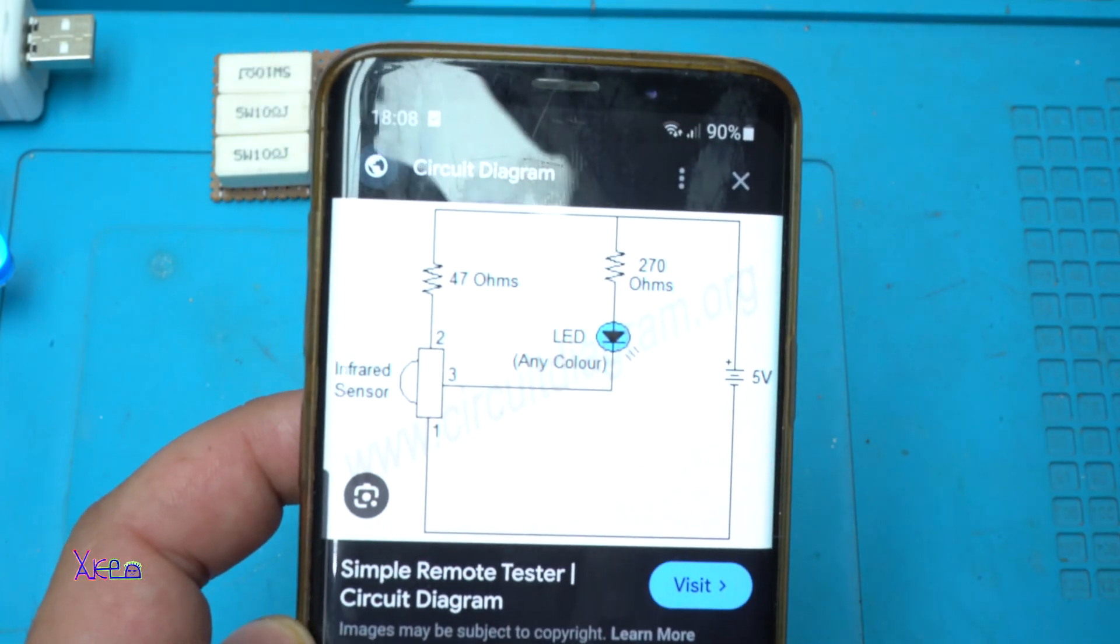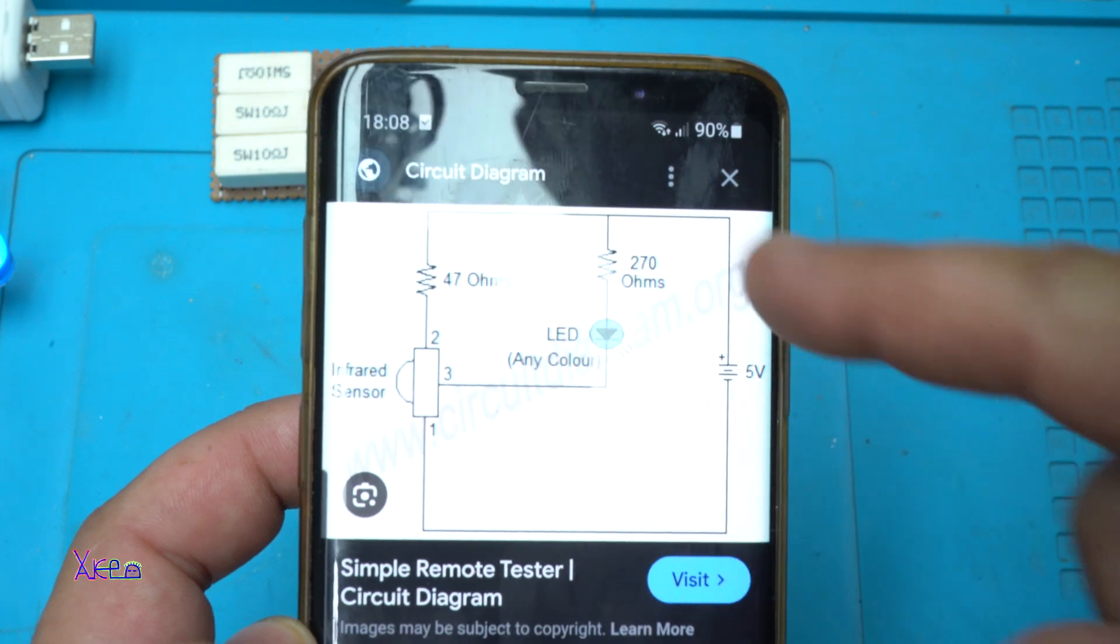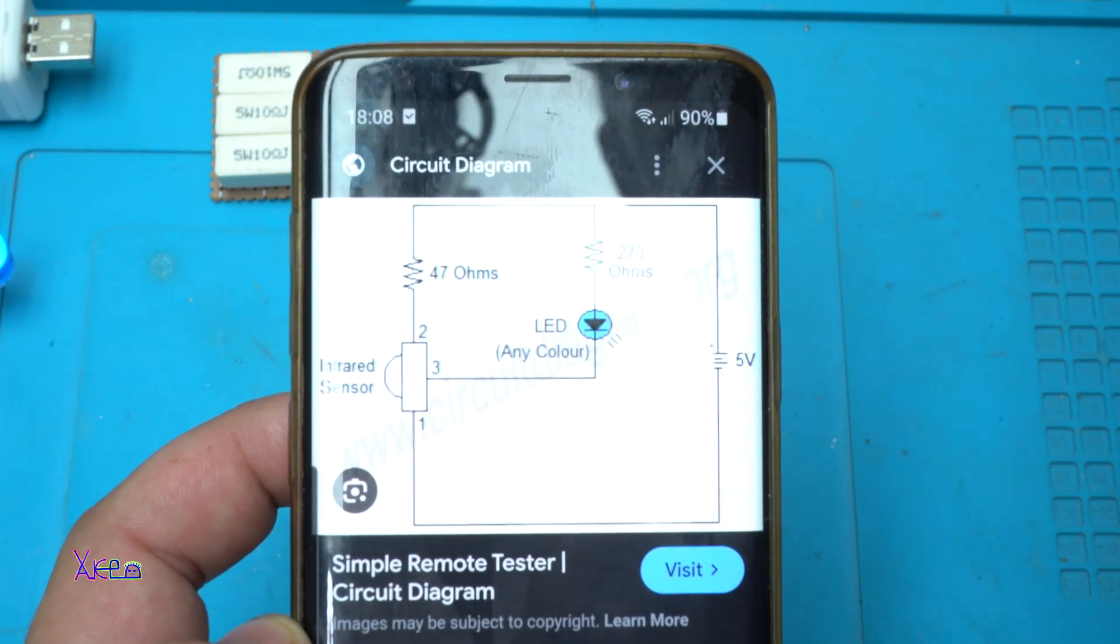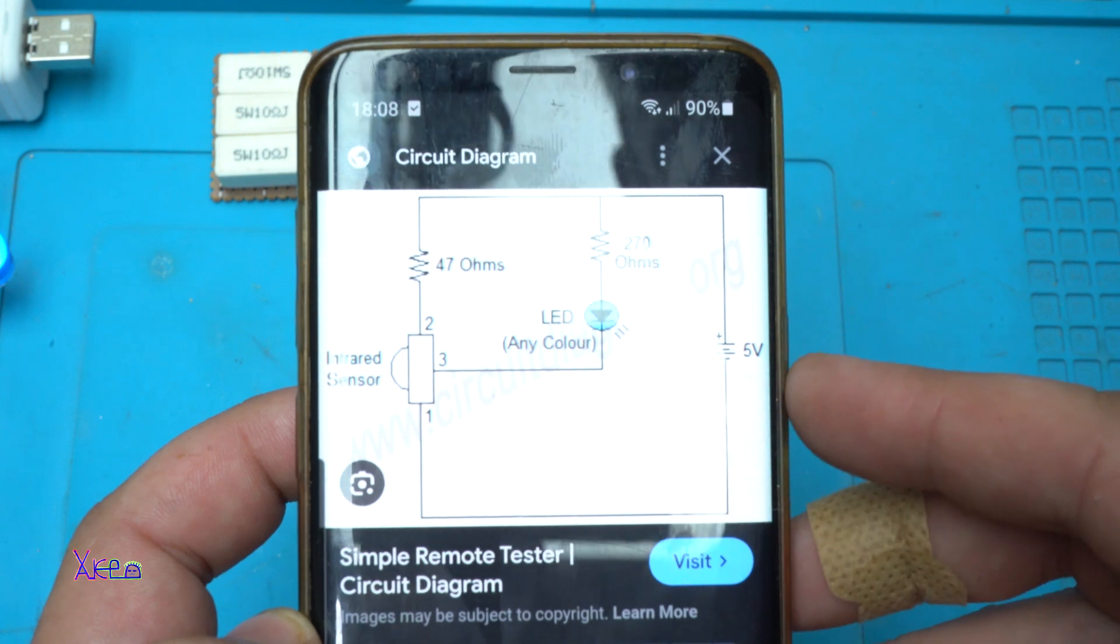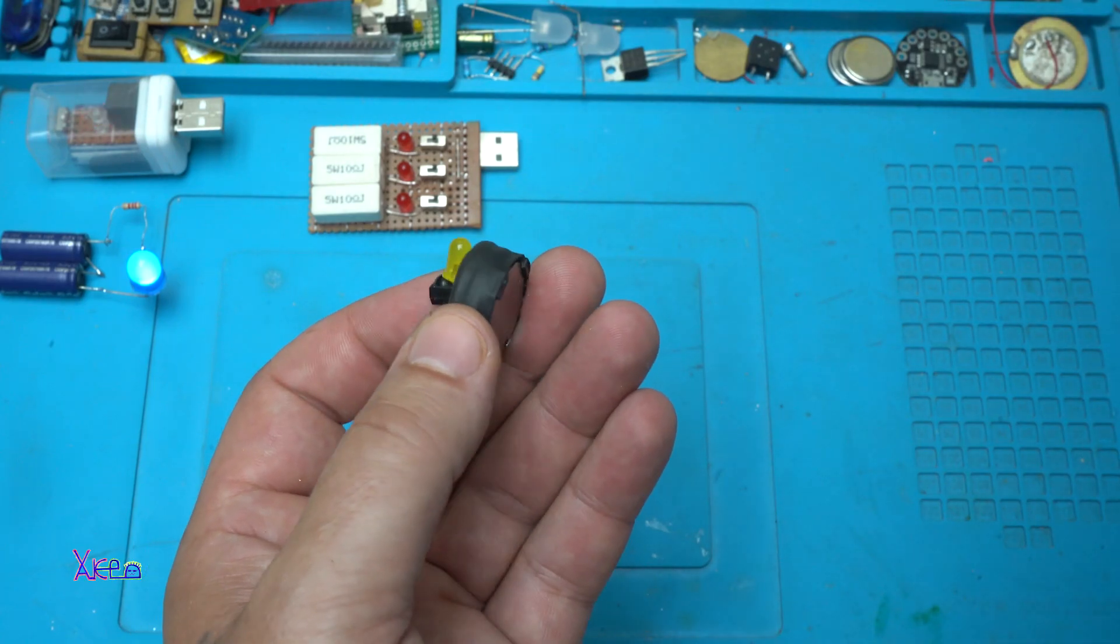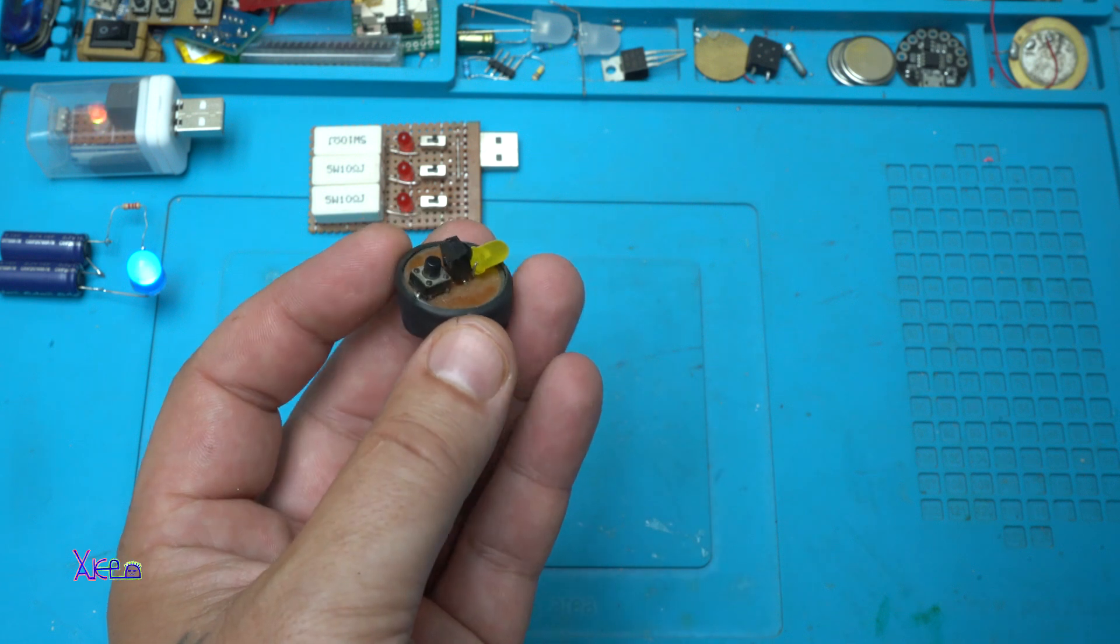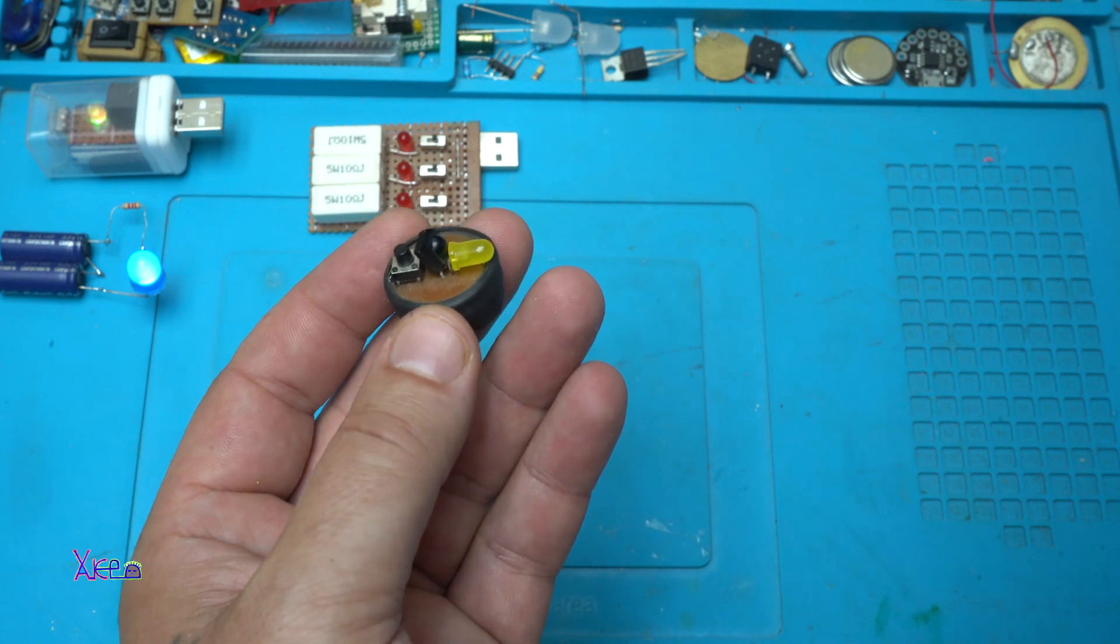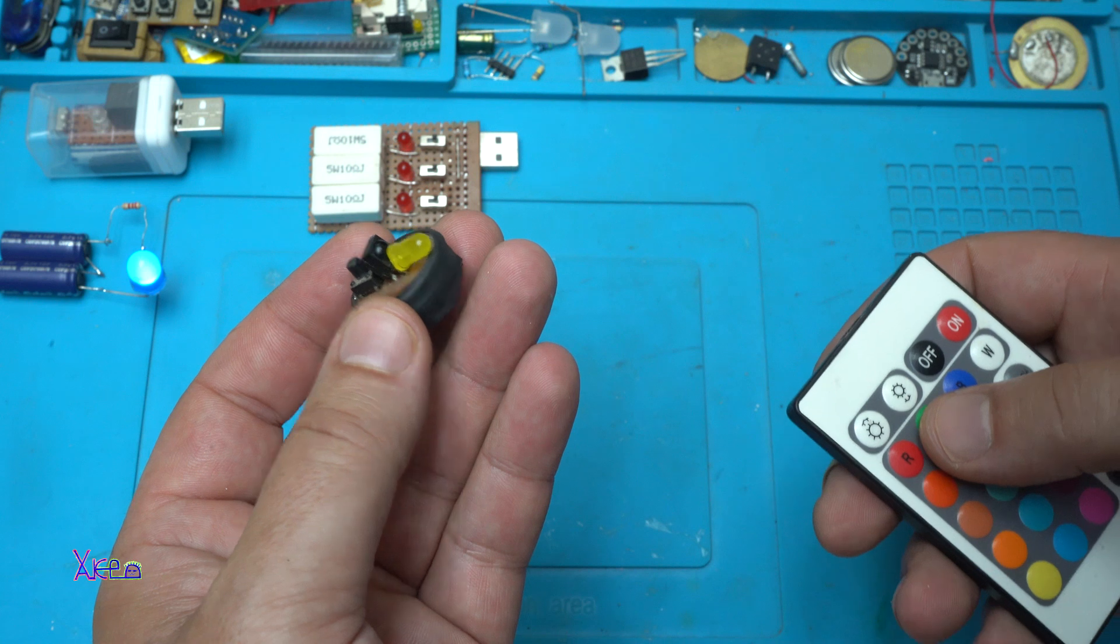And if you want to build it, here is the circuit diagram. Take a screenshot on your mobile. It's very handy and I'm using it when I'm repairing remote controls.